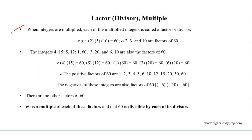When integers are multiplied, each of the multiplied integers is called a factor or divisor. For example, if we consider 2, 3, and 10, then we can get that 2 times 3 times 10 equals 60. Therefore, 2, 3, and 10 are the factors of 60.